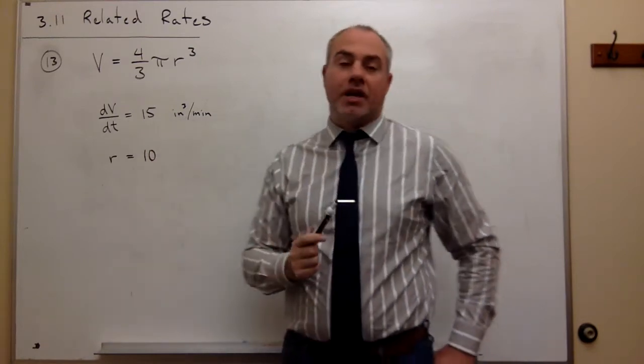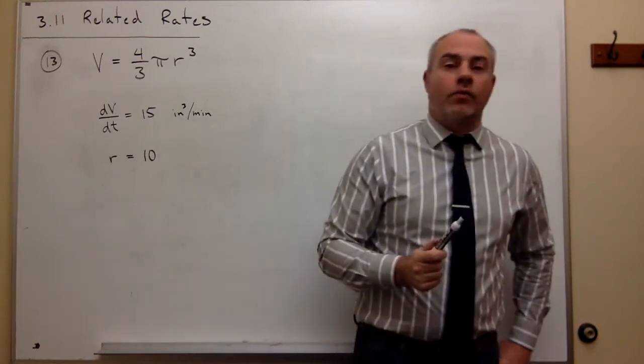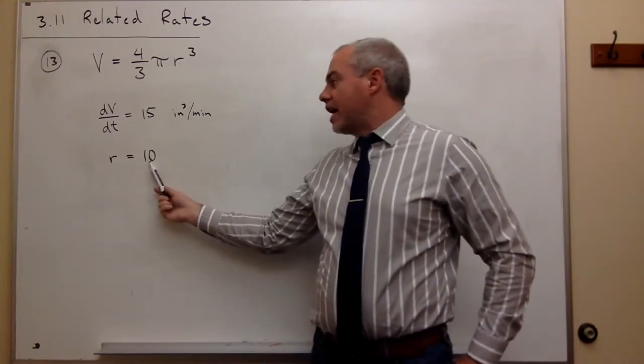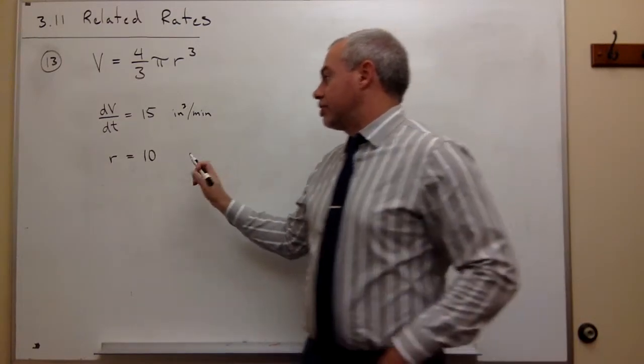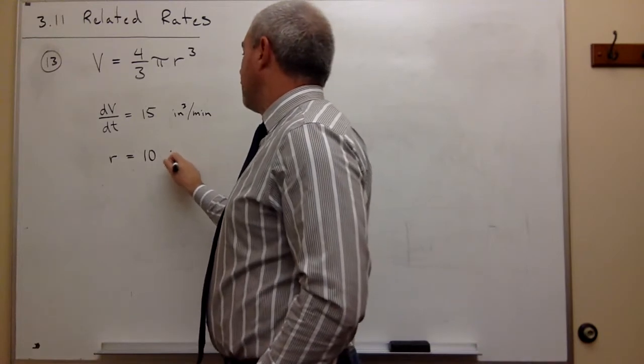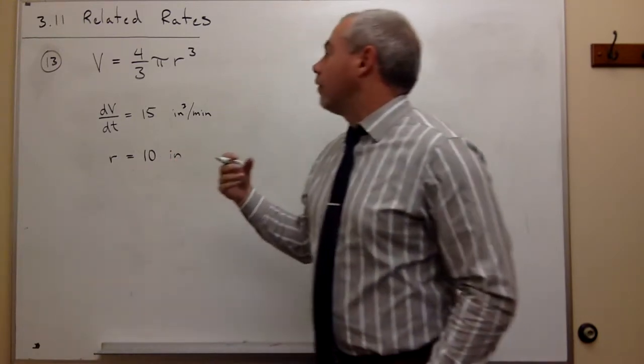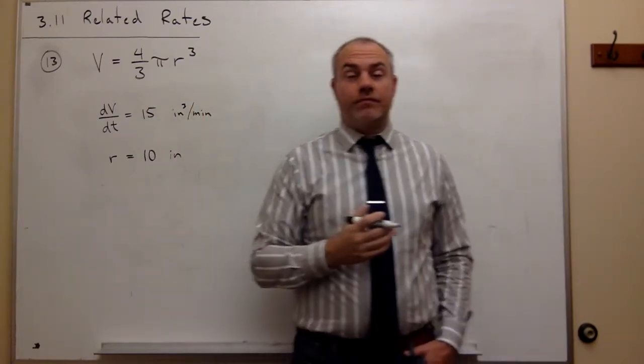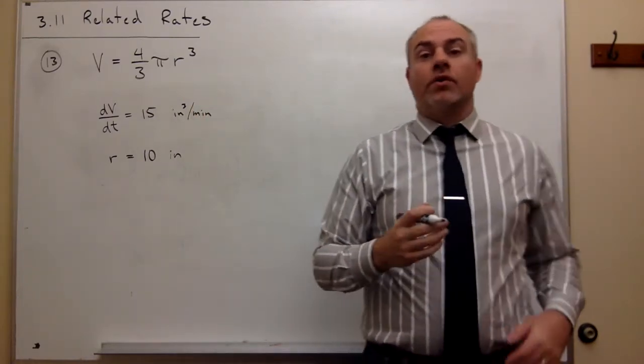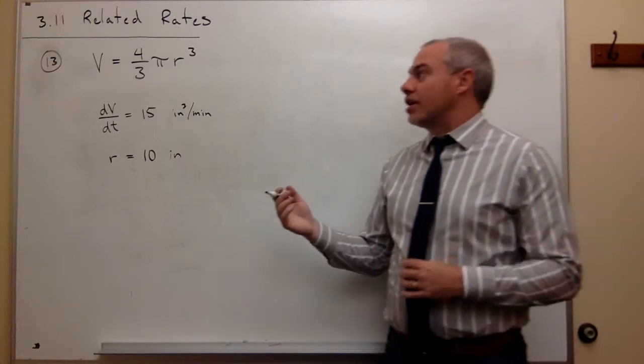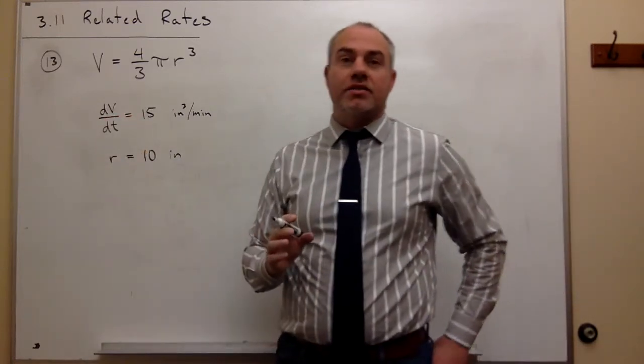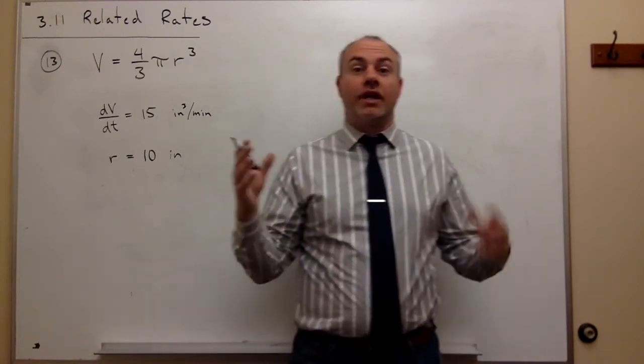What we need to know is when the radius is 10 inches, what is the rate of change of the radius of that sphere. Since we're dealing with a sphere and we know something about its volume and something about its radius, we need an equation that relates those two things together.